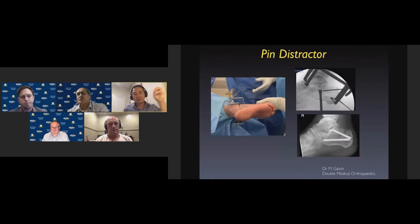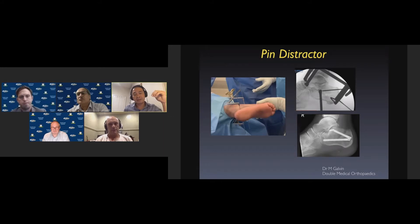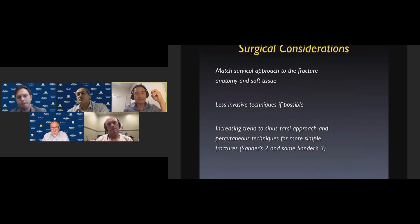More recently, one of my colleagues has started using a pin distractor with pins placed in the talus and in the calcaneus to distract the subtalar joint. This does two things: it creates room in the subtalar joint for the posterior facet to be punched up and reduced, and it also helps to reduce the varus and restore the length of the calcaneus.